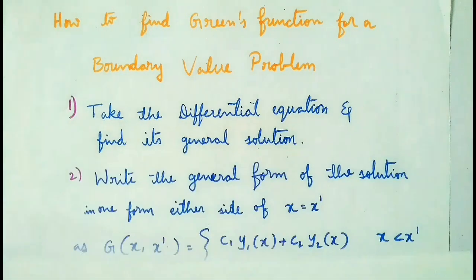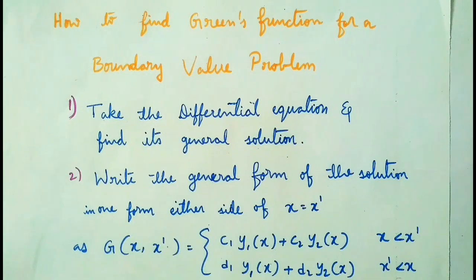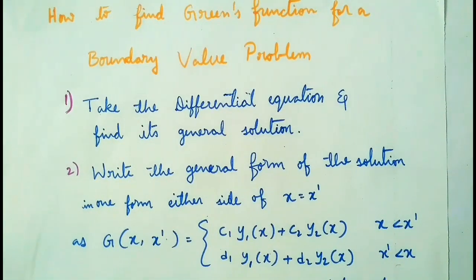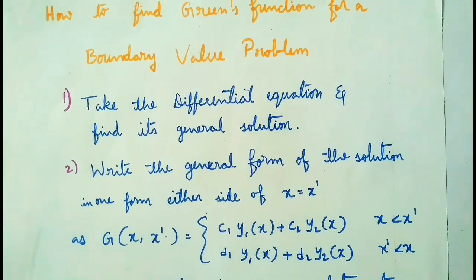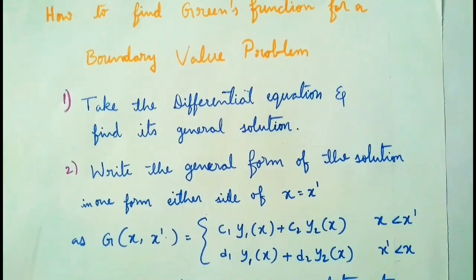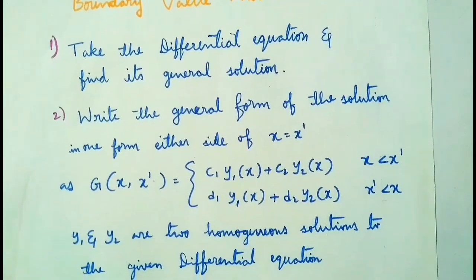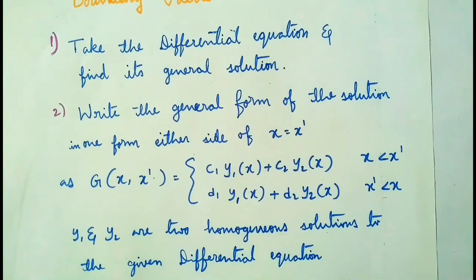The second step is to write the general form of the solution on either side of x equals x-dash, that is, at the boundary condition. Write the general solution in the Green's function form: G(x, x') = c1·y1(x) + c2·y2(x) for x less than x-dash, and d1·y1(x) + d2·y2(x) for x-dash less than x. Here y1 and y2 are two homogeneous solutions to the given differential equation.